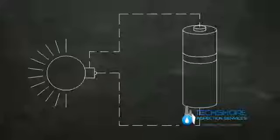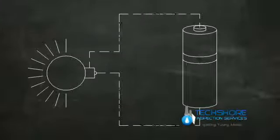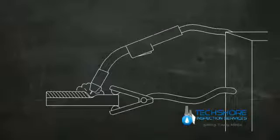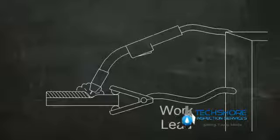In an electric circuit, the current flows in a loop. In MIG welding, the current has to flow in a complete circle from the machine, to the torch, into the work, and back to the machine. A work lead is clamped to the work to complete the circuit from the workpiece back to the machine.